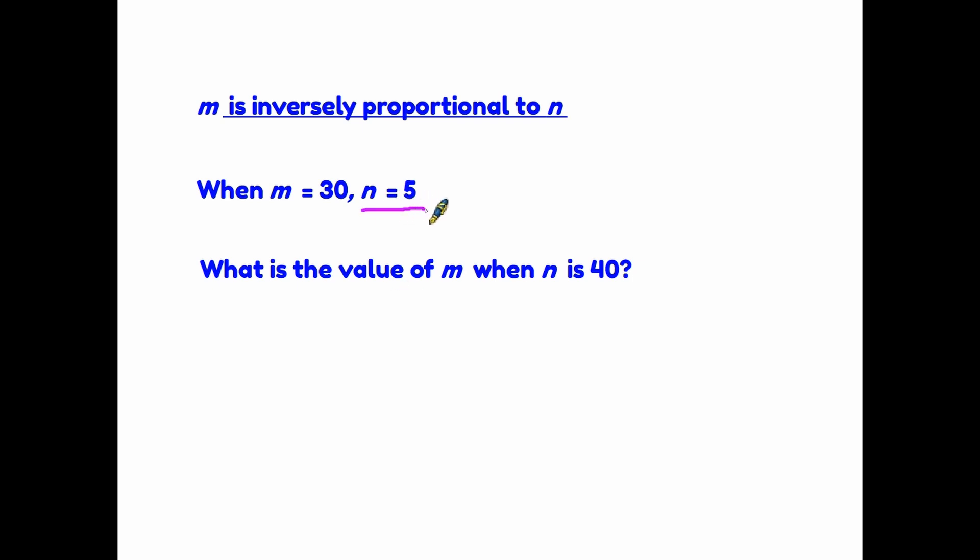So we need to look at these two lines and see whether we can identify how one of these numbers has changed. Well, we are given the value of n in both situations here. Now, n has increased from five up to 40. We need to know what that multiple is. So quite simply, 40 divided by five tells us that n has been multiplied by eight. Now, follow the rule. If n has been multiplied by eight, then m has to be divided by eight. Where was m? m was 30. Therefore, we have to divide that by eight. So the new value for m is 3.75. So don't forget, whatever the multiple is of one of the numbers, you have to divide the other number by the same amount.